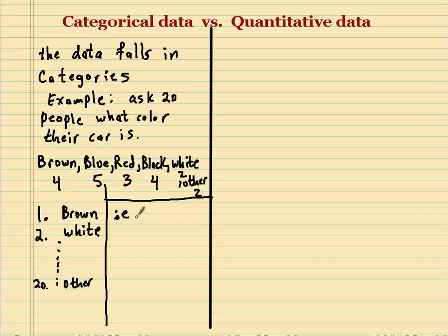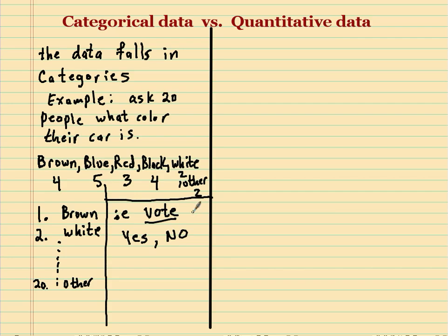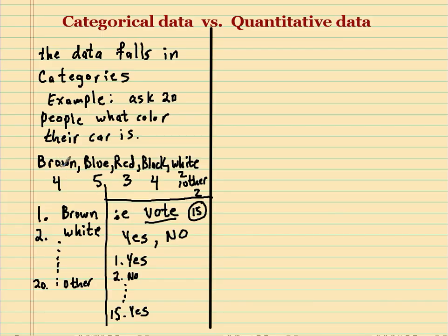Another quick example of categorical data: we might ask someone 18 or older, are you going to vote? The two categories to answer from are yes or no. We're going to ask 15 people if they're going to vote. The data we get back are words. When we're done, we typically want to find the percent or relative frequency from each category.